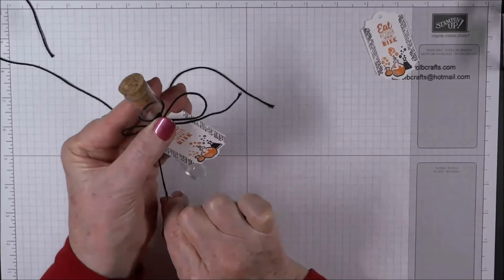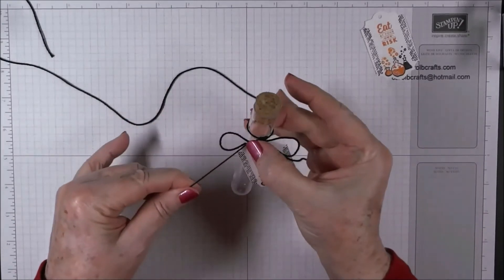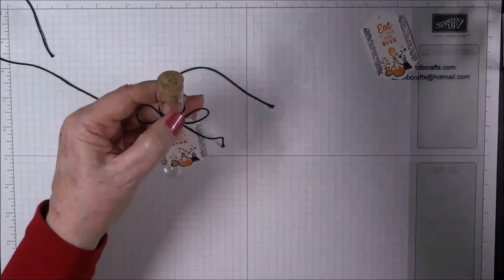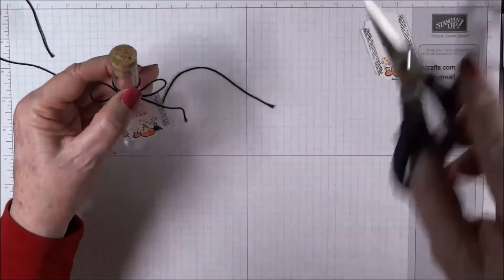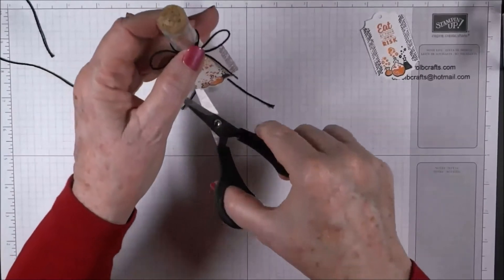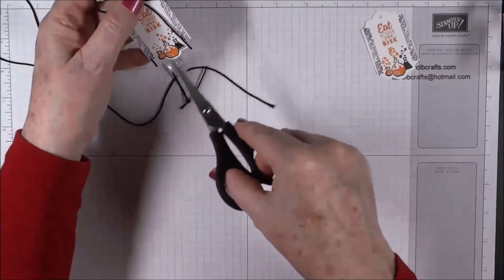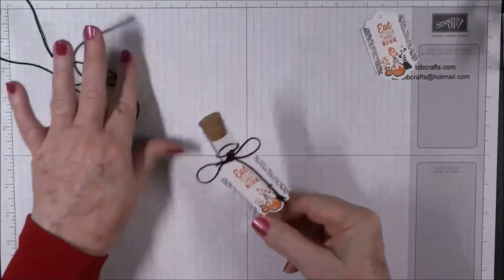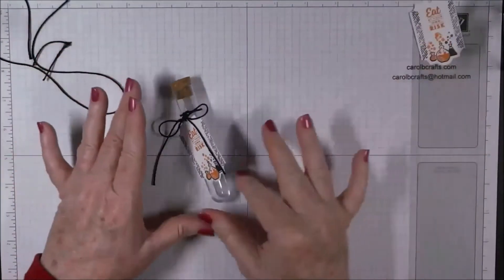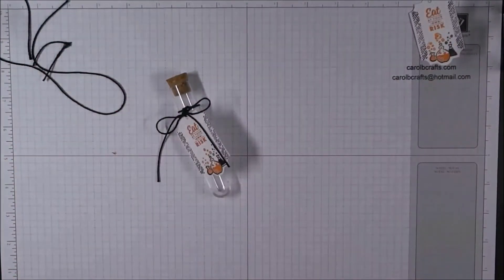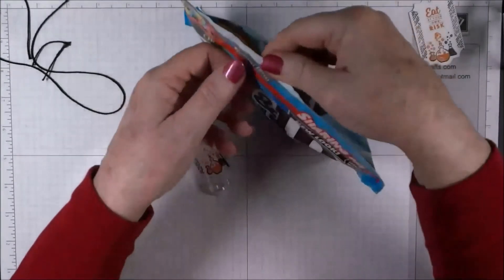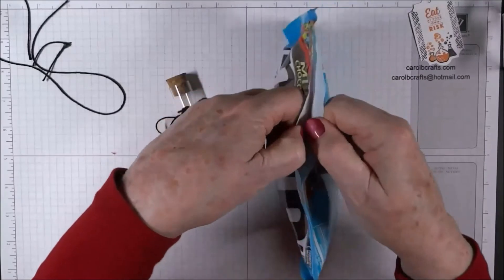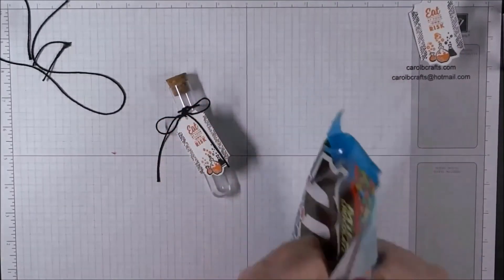And then we'll just take our snips and cut our ends off here a little bit, about the same length as the tag. Okay, now we're ready to fill it up. And I chose to fill it up with the mini M&Ms. I love M&Ms, so I'm just going to fill it up with that.